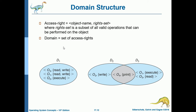We have three domains: D1, D2, and D3. D1 has access to object O3 (read and write), O1 (read and write), and O2 (execute only). Domains can share access rights — D2 and D3 share the print operation for object O4. D2 also has write access to O2. D3 has execute for O1 and write for O3. This illustrates that domains can share one or more access rights.